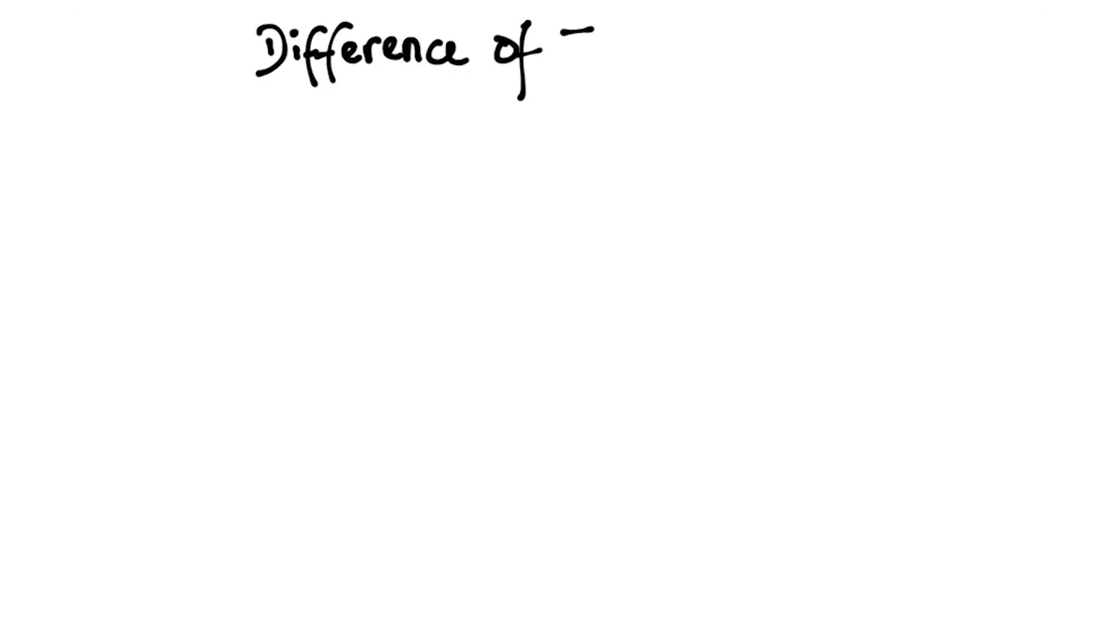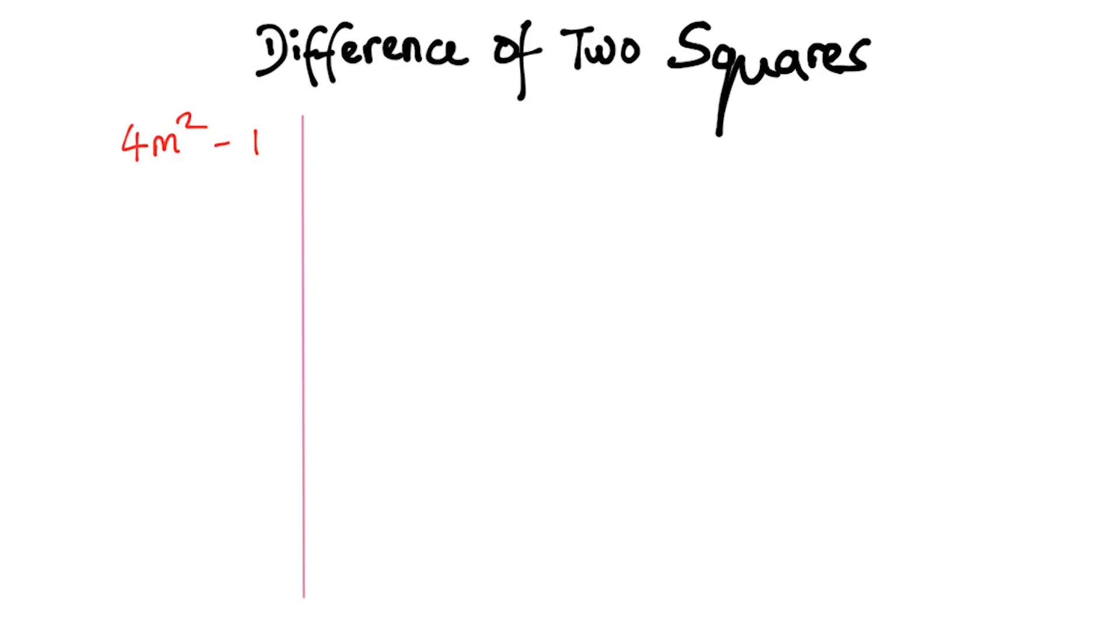Alright, so let's start off with difference of two squares. And as I go through each one, you can pause the video and try it by yourself. So this is 4M squared minus 1. What I am going to do is find the square root of 4M squared, this is equal to 2M, and find the square root of 1, this is equal to 1. And now I just write it. This is how the answer comes: 2M plus 1 by 2M take away 1.